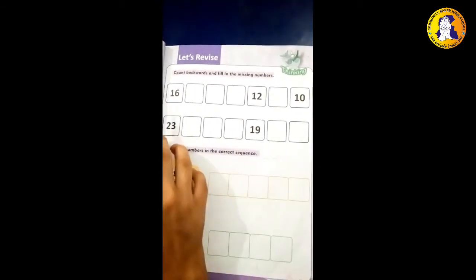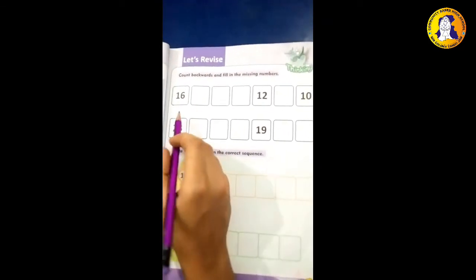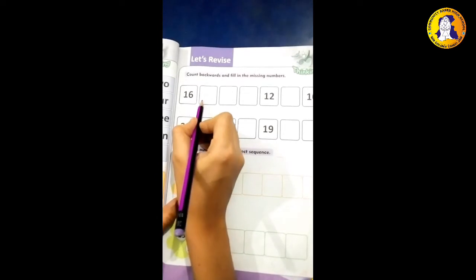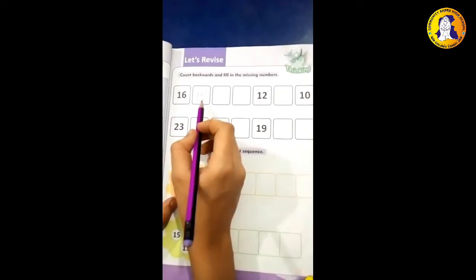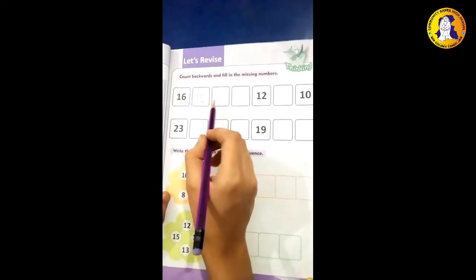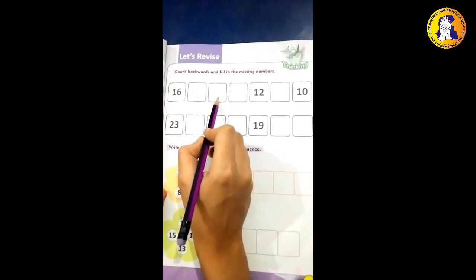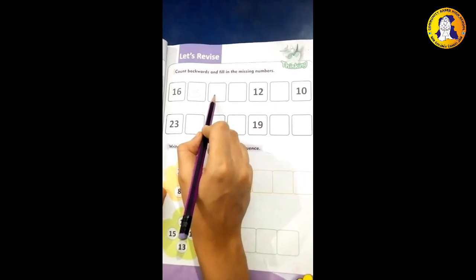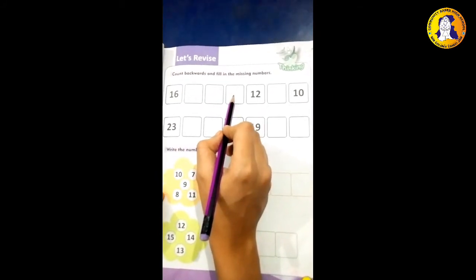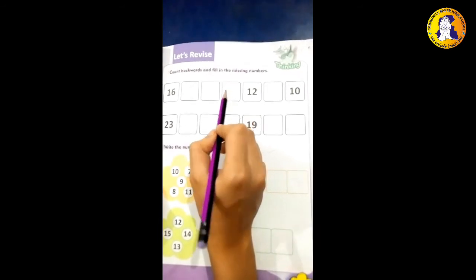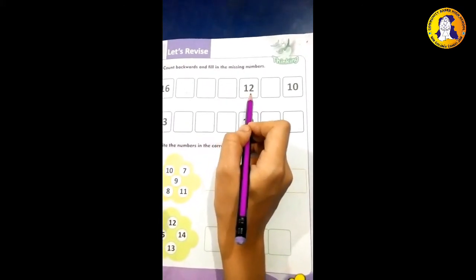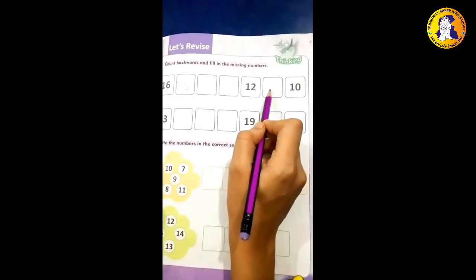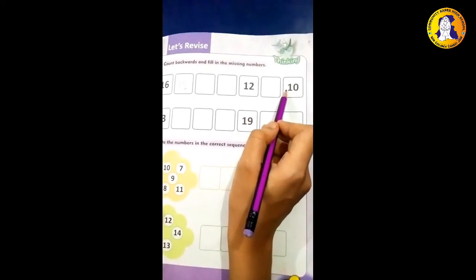Children, as we have learned, backwards means counting backward. Like here 16 is written. What do we read before 16? 15. Before 15, what do we read children? 14, yes. Before 14, what do we read? 13, one-three. Before 13, what do we read? 12. Before 12, what do we read? 11. Before 11, what do we read? 10.